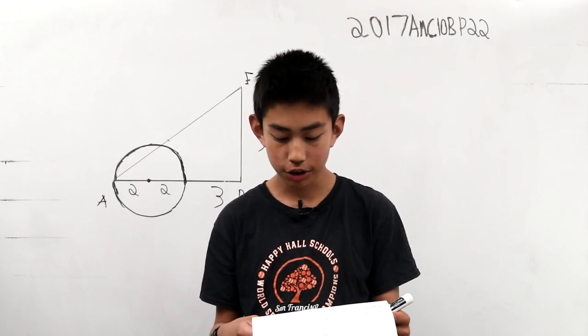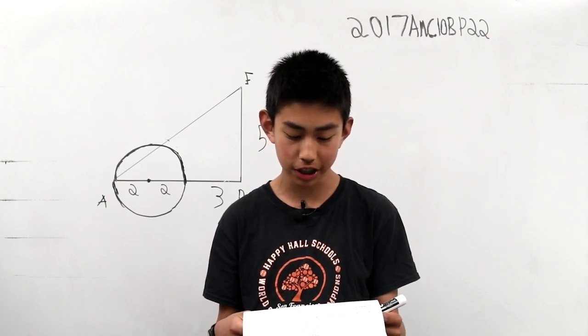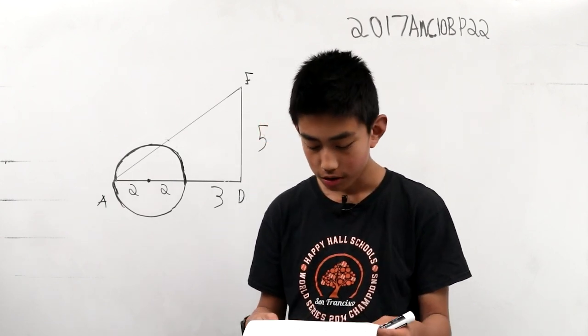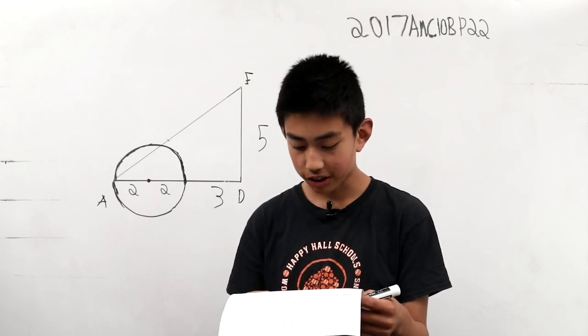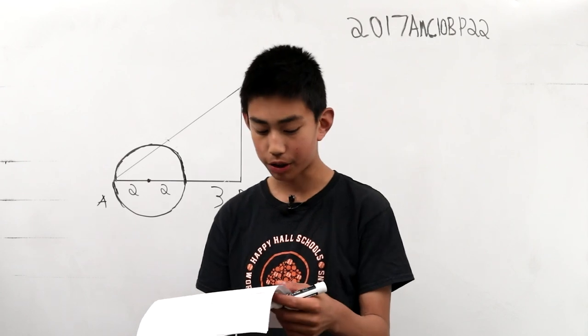Point E is chosen so that ED is 5 and line ED is perpendicular to line AD. Segment AE intersects the circle at a point C between A and E. What is the area of triangle ABC?